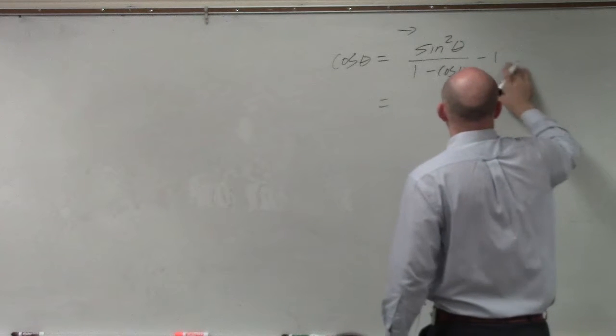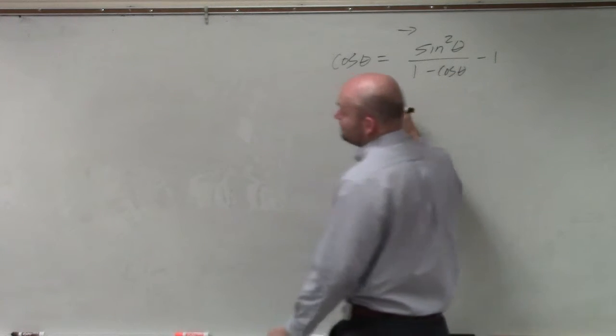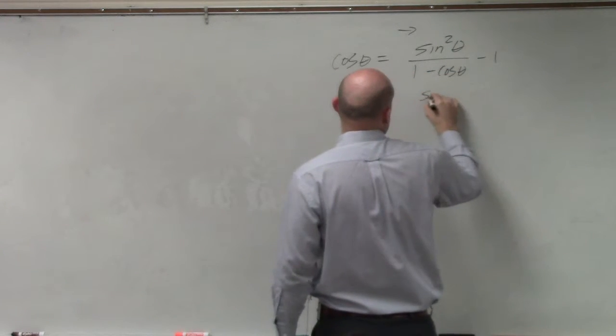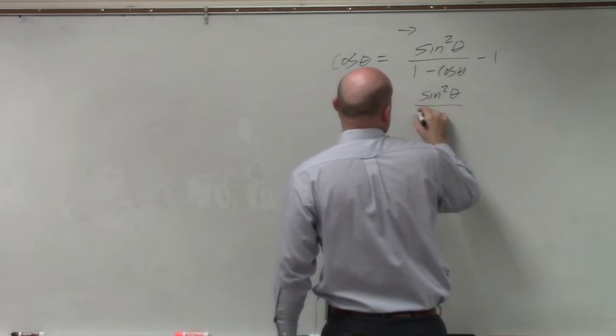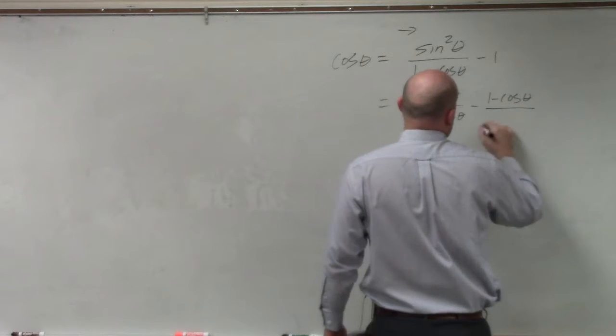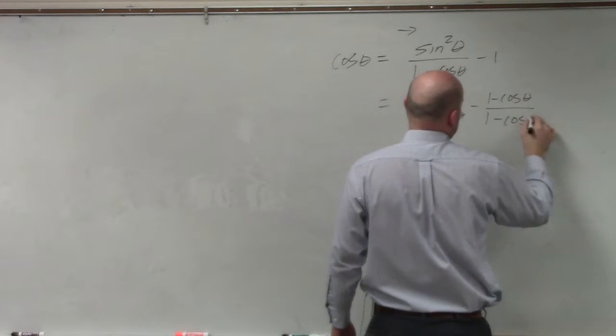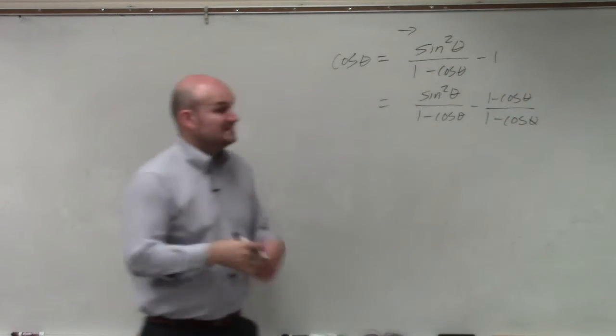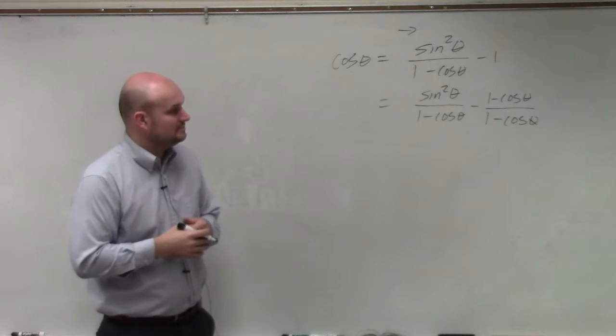So in theory, what I could do here is I could write this as sine squared of theta over 1 minus cosine of theta minus 1 minus cosine of theta over 1 minus cosine of theta. Now I could subtract those two, right?